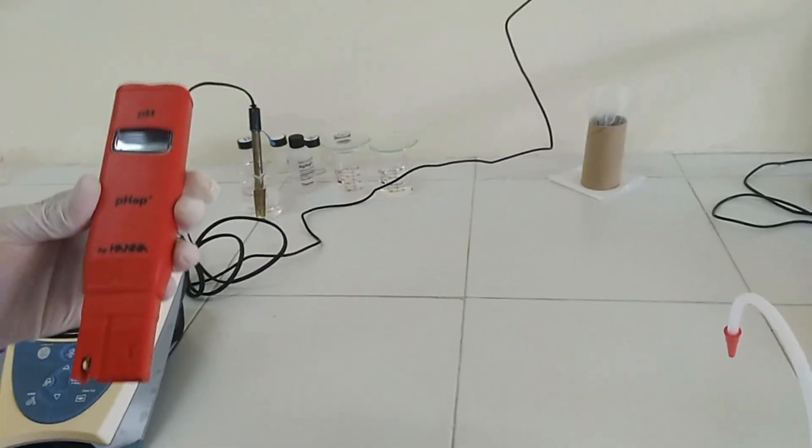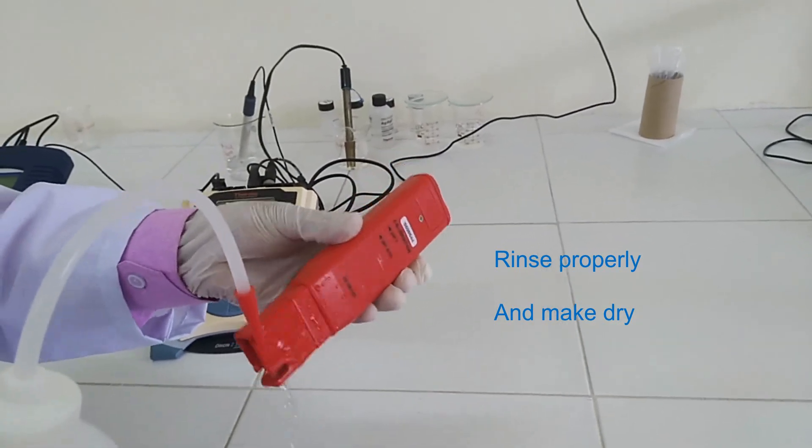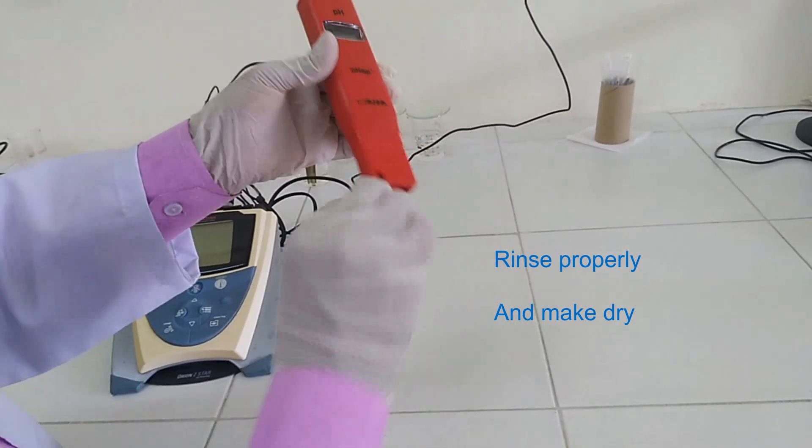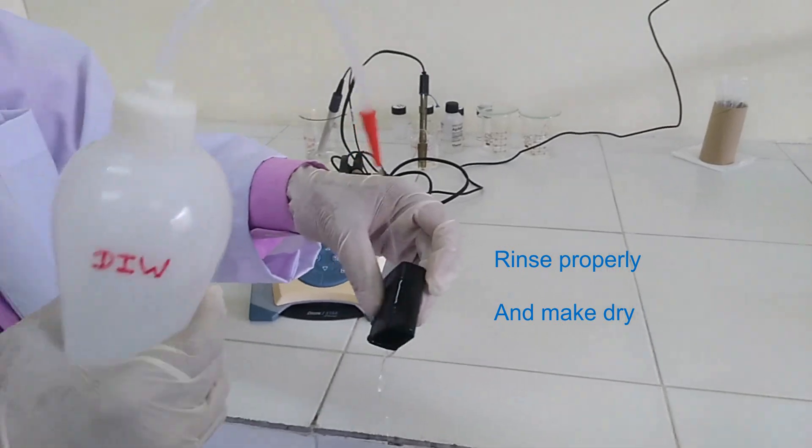Take pH meter, rinse with deionized water, and make it dry by lint-free DC paper. Never wipe a glass ball of electrode with DC paper because static cells will build up. Also rinse and make dry the cap.